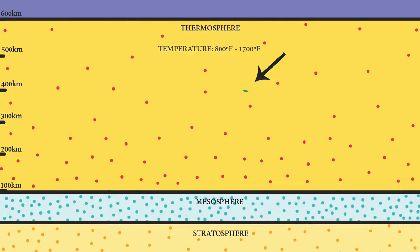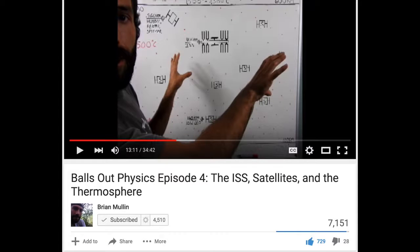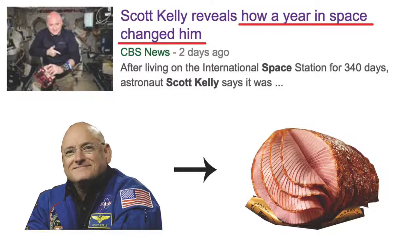So obviously something's not right here. And if you want a more detailed explanation of what I'm talking about, watch Brian Mullin's Balls Out Physics episode 4, The ISS Satellites in the Thermosphere, and you'll understand it perfectly. So I'm calling BS on the ISS orbiting around in an oven. I'm calling BS on Scott Kelly who should be a honey-baked ham.